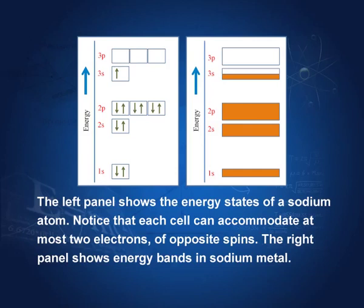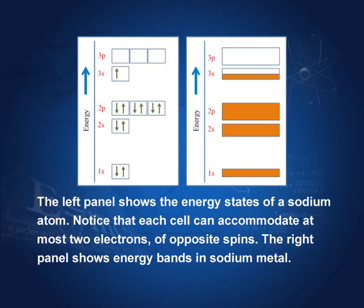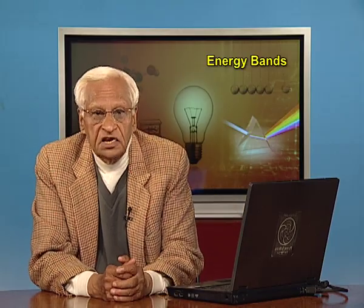Let us see the bands in sodium. In sodium, 1s has 2 electrons, 2s has 2 electrons, 2p has 6 electrons, and 3s has 1 electron — that is the electronic structure of the sodium atom. When sodium atoms are packed together in a piece and there is a crushing of individual atoms, these shells become bands: 1s band, 2s band, 2p band, and 3s band. The 3s band has only 1 electron. All the lower bands are full, but the 3s band has only 1 electron in the shell, and here there is a continuous distribution of energy — 3s is partially filled.